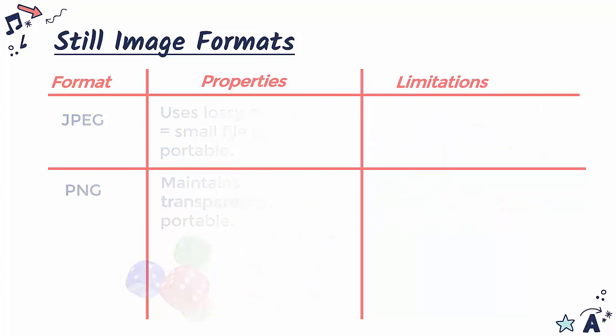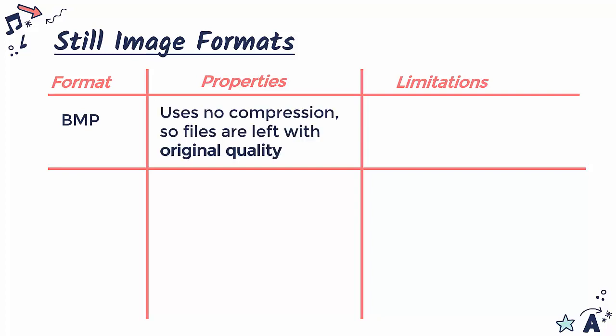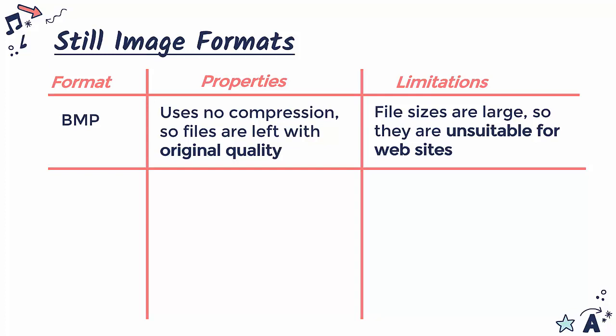Two more examples worth knowing: a BMP image is a bitmap image, that's what it's short for. BMP uses no compression, so it leaves your image file at its original quality, which is useful in some cases - for example, a really high quality billboard or printing a glossy magazine where leaving it in its original quality is quite important. But clearly if there's no compression, you're going to have large file sizes, and they're very unsuitable for websites where having to download the original quality file may take too long.